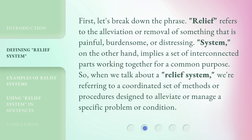First, let's break down the phrase. 'Relief' refers to the alleviation or removal of something that is painful, burdensome, or distressing. 'System,' on the other hand, implies a set of interconnected parts working together for a common purpose. So, when we talk about a 'relief system,' we're referring to a coordinated set of methods or procedures designed to alleviate or manage a specific problem or condition.